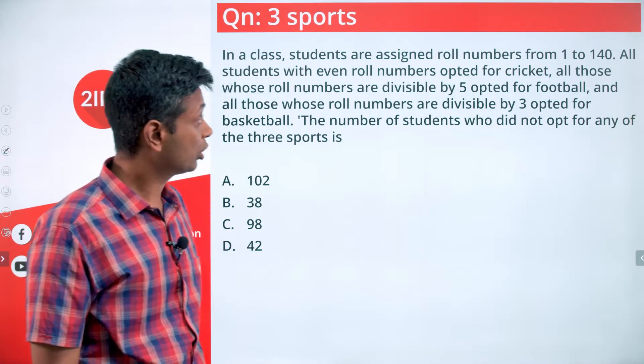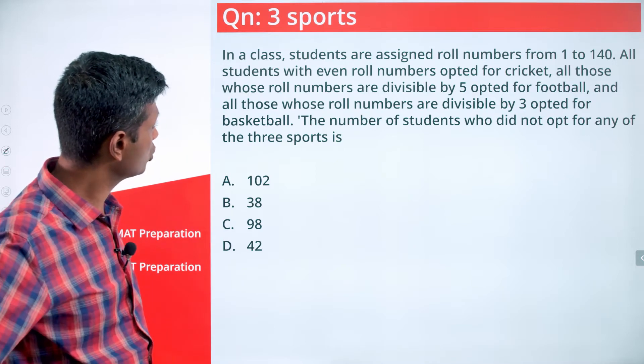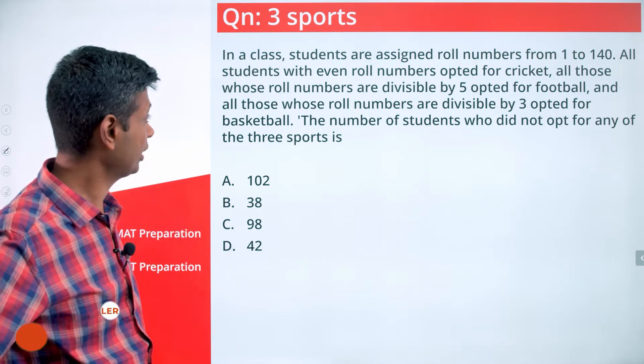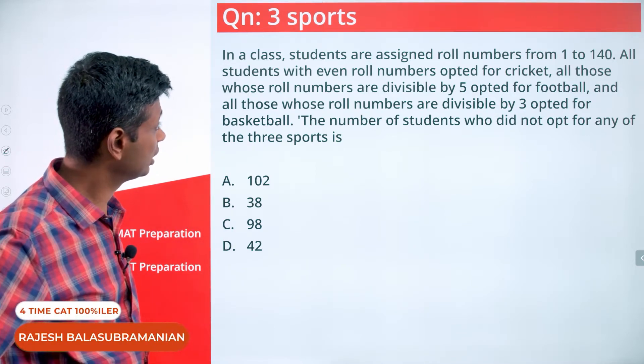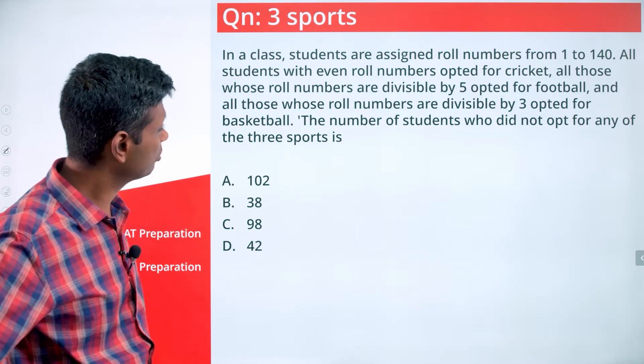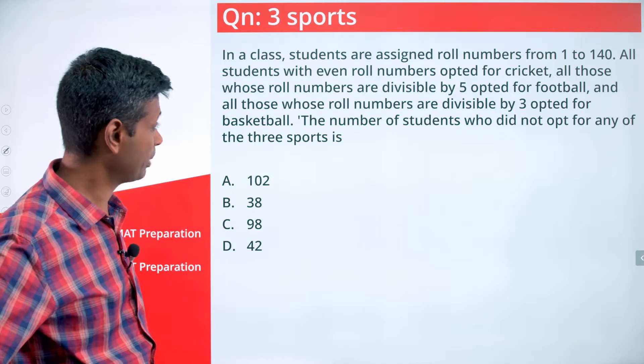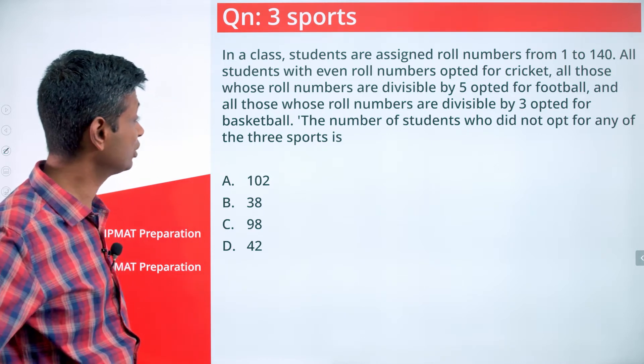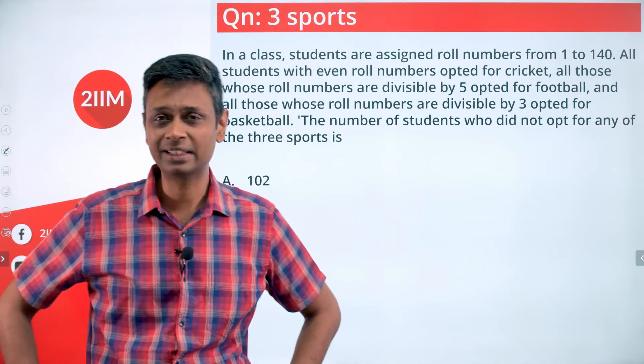In a class, students are assigned roll numbers from 1 to 140. All students with even roll numbers opted for cricket, all those whose roll numbers are divisible by 5 opted for football, and those divisible by 3 opted for basketball. The number of students who did not opt for any of the three sports is a classic set theory question.